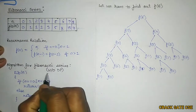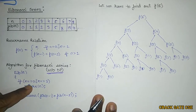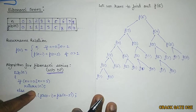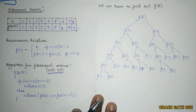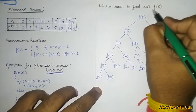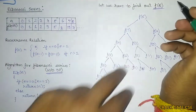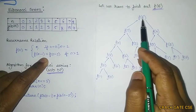What is the general algorithm for the Fibonacci series without dynamic programming? The function Fibonacci(n): if n equals 0 or n equals 1, return n; else return F(n-1) plus F(n-2). Now let's try to understand this by finding Fibonacci of 6, that is F(6). I am representing it in tree format using this recurrence relation.